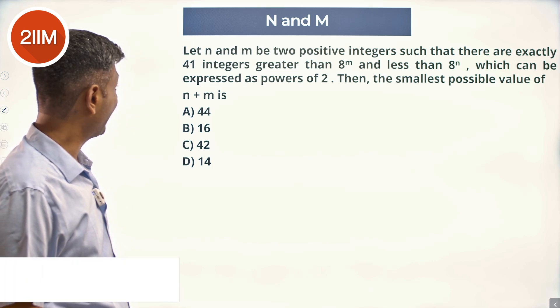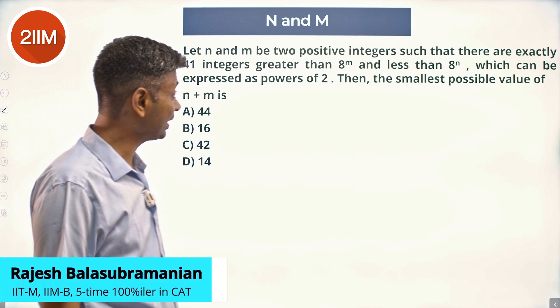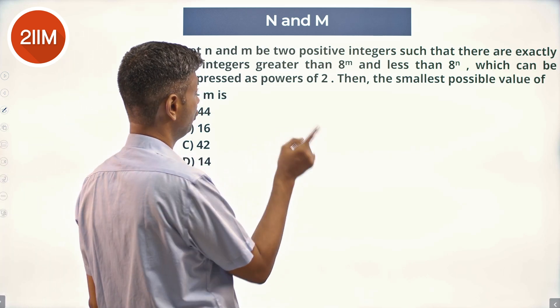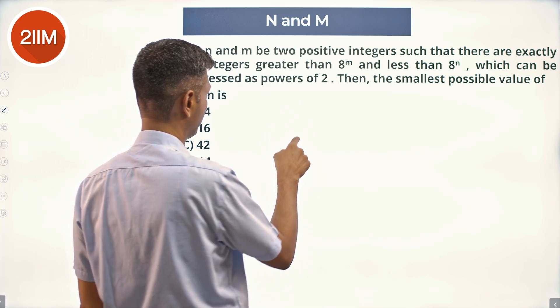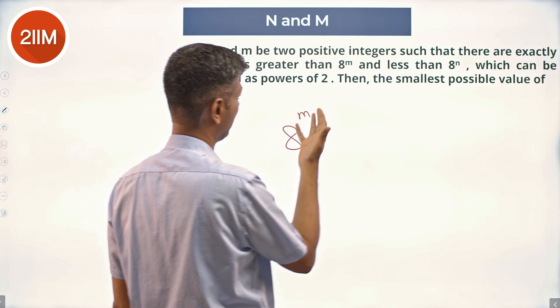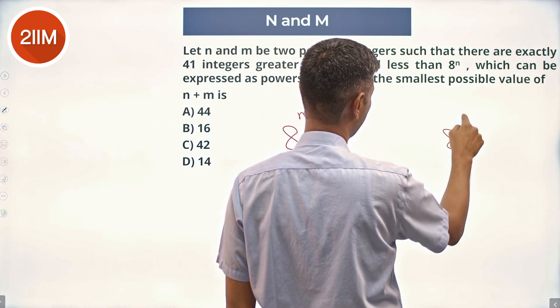Let n and m be two positive integers such that there are exactly 41 integers greater than 8 power m and less than 8 power n, which can be expressed as powers of 2. So, between 8 power m and 8 power n...